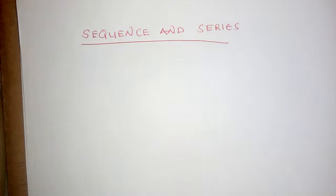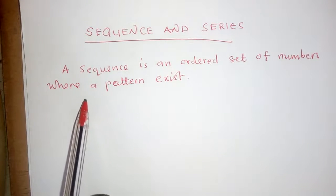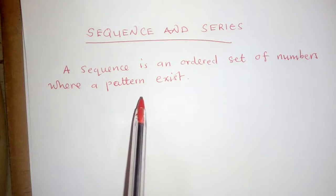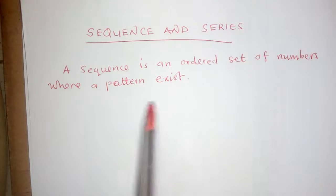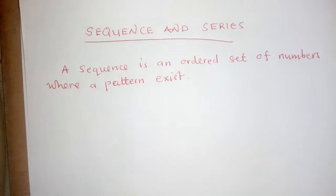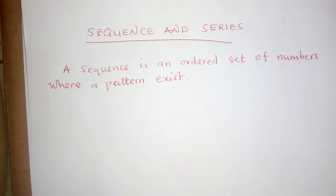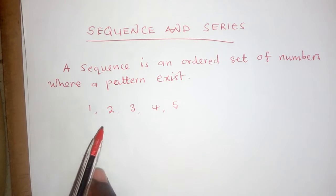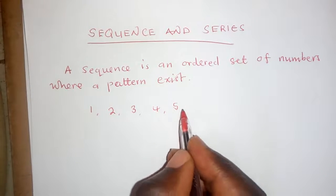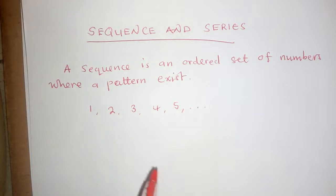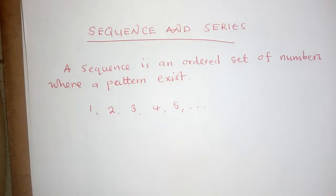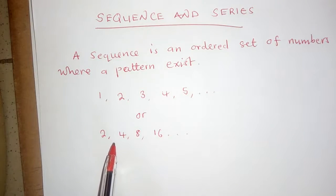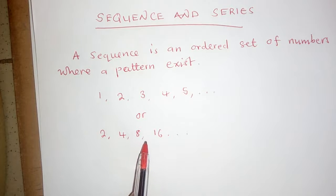A sequence is an ordered set of numbers where a pattern exists. An example would be 1, 2, 3, 4, 5, … where the three dots show numbers are still going. Another example is 2, 4, 8, 16 — that is also a sequence.